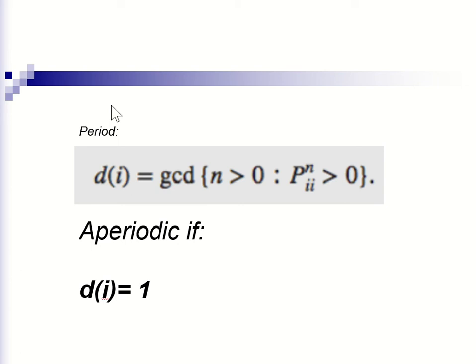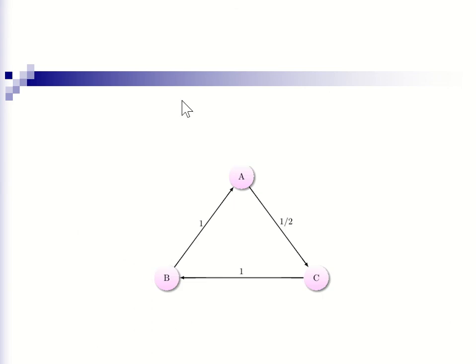And if the greatest common divisor is 1, that means you have an aperiodic state. So let's look back at another example.